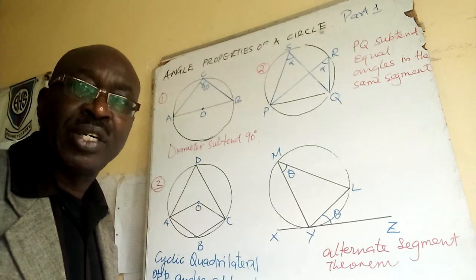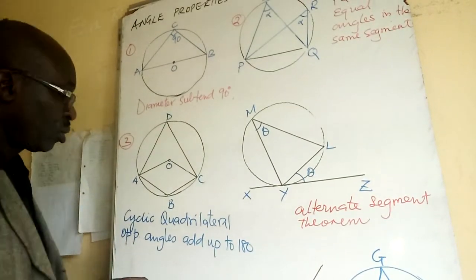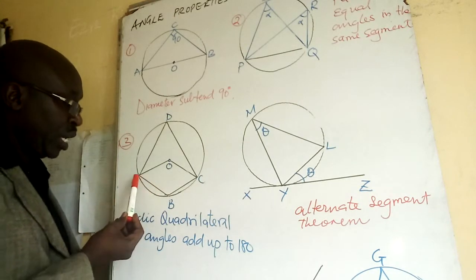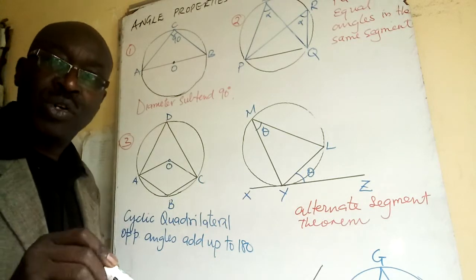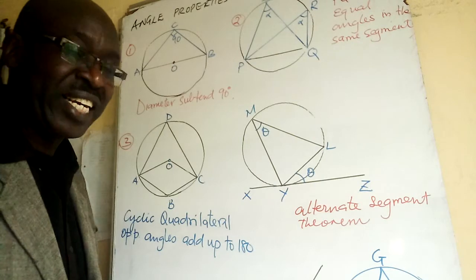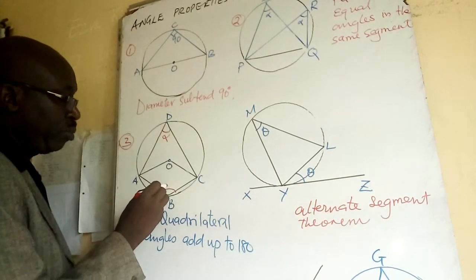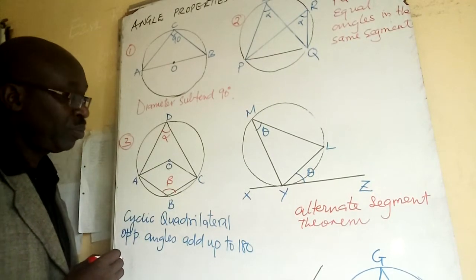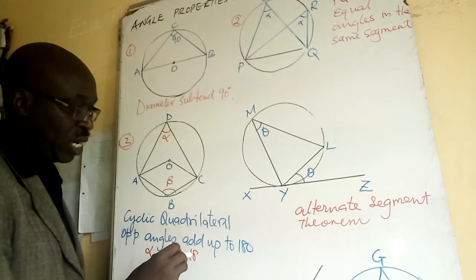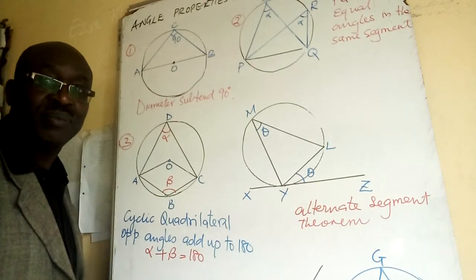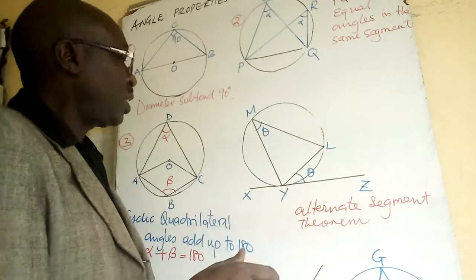Since ABCD is a cyclic quadrilateral, the opposite angles add up to 180°. If we label one angle alpha and the opposite angle beta, then alpha plus beta equals 180°. Two opposite angles in a cyclic quadrilateral add up to 180°.